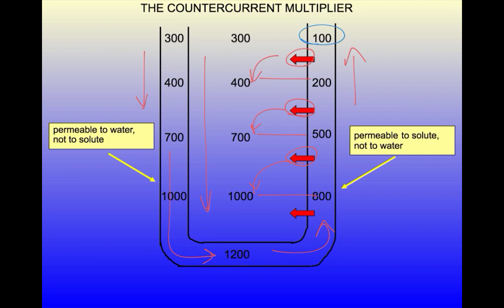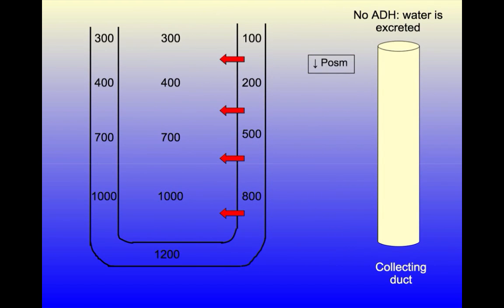At this point, if the body needs to get rid of water because plasma osmolality is too low, ADH secretion will be suppressed, water will remain in the collecting duct, and a very dilute urine will be excreted, allowing plasma osmolality to rise back towards normal.